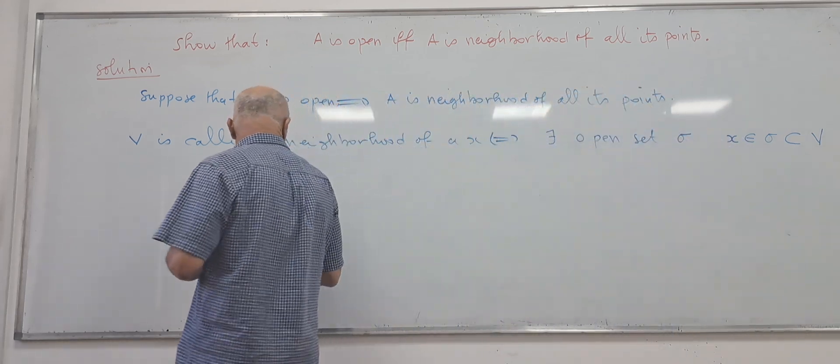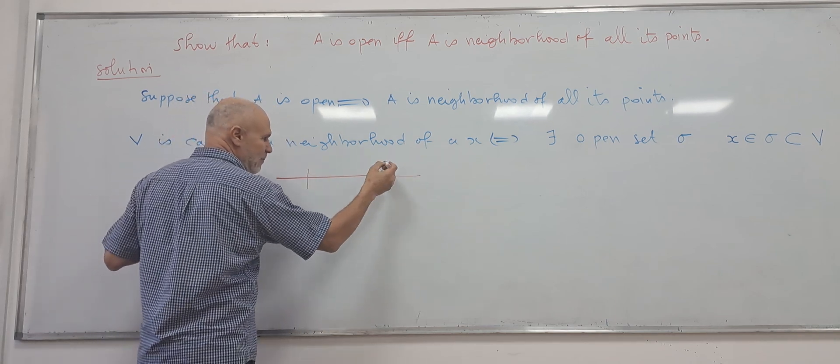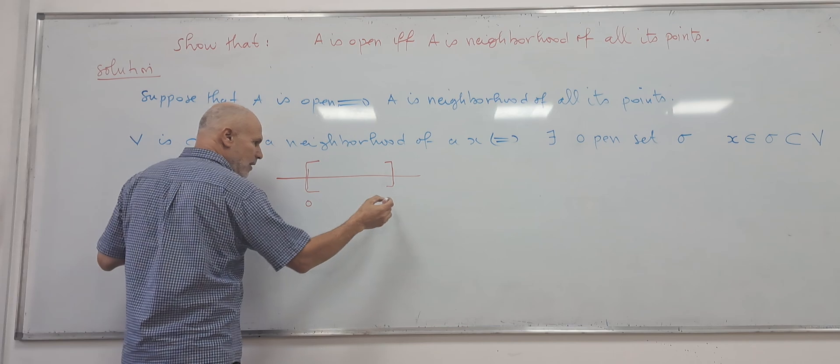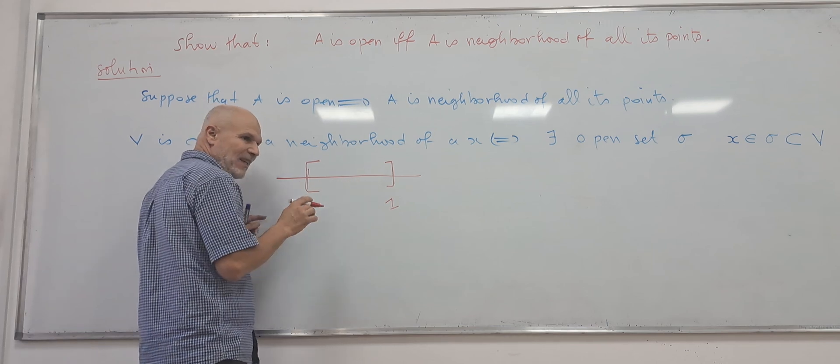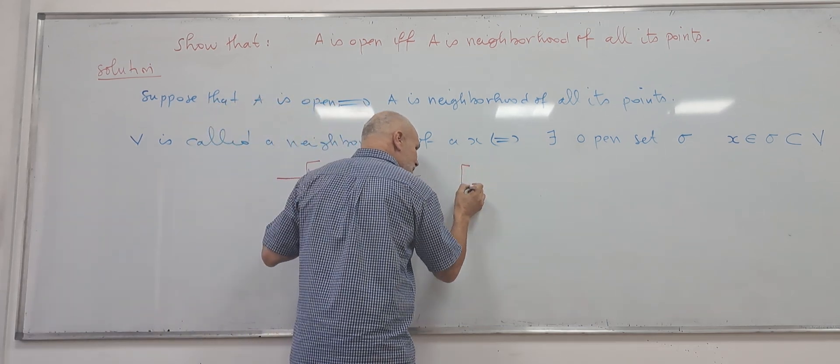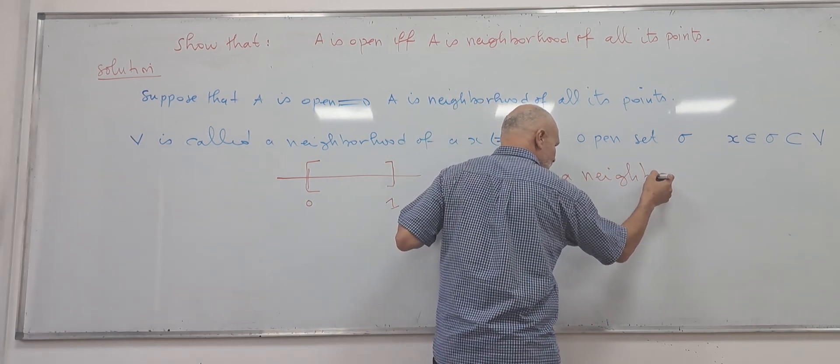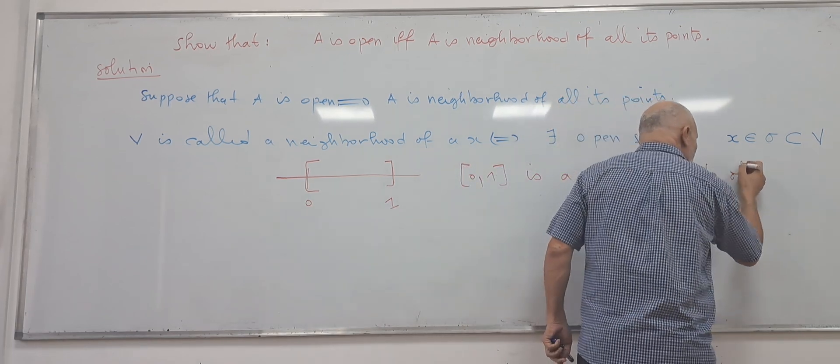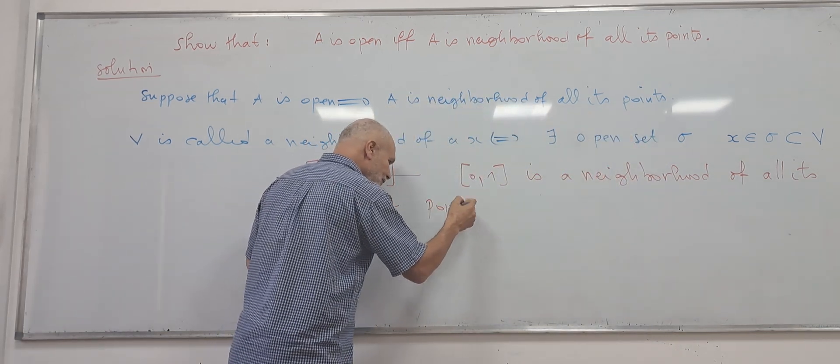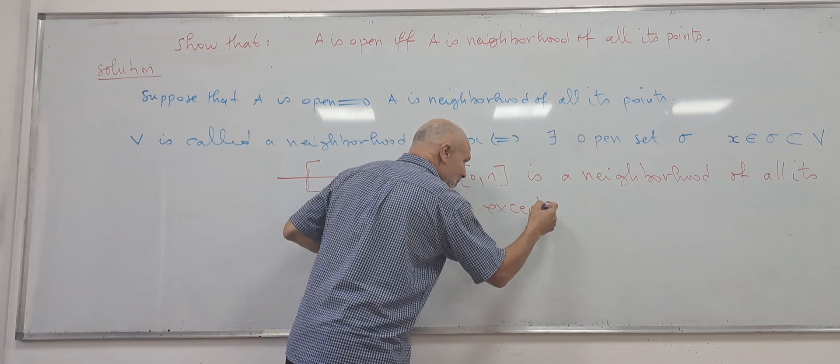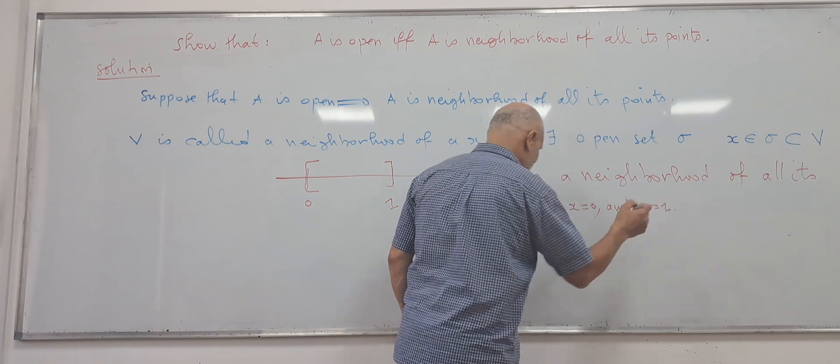For example, if we take, we are in R and we take for example [0,1]. This interval is a neighborhood of all its points except two points, except X equal 0 and X equal 1. Why?